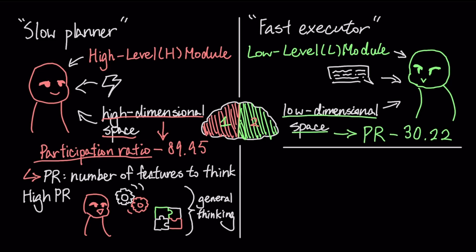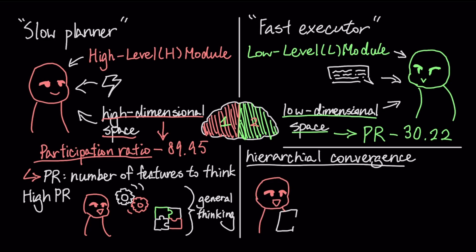The model's power comes from a process called hierarchical convergence. The H module sets a plan, the L module executes many rapid steps to solve it, and its result is fed back to the H module to update the overall strategy, enabling deep nested computation.